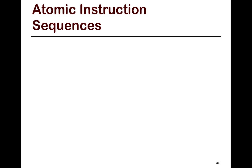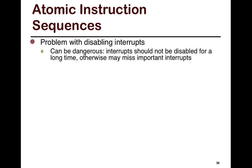Let's start taking a look at atomic instruction sequences in general. In the previous solution we looked at interrupts and using interrupts to implement critical sections and locks. The problem with disabling interrupts in general is that it can be dangerous — interrupts should not be disabled for a long time.